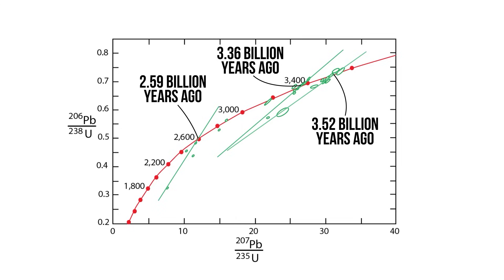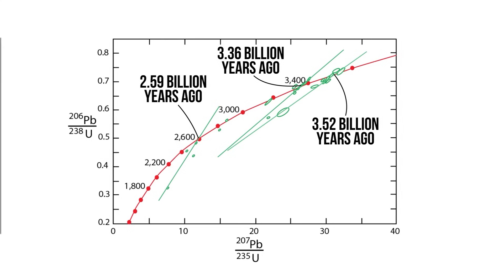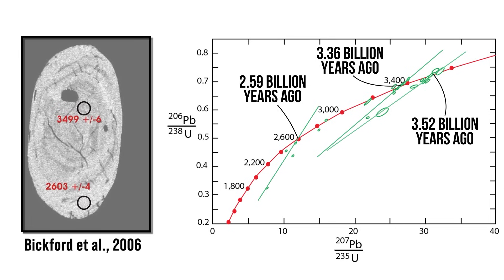The scientists who gathered this data suggested that rocks of two different ages, 3.52 and 3.36 billion years, were mixed together during a deformation event around 2.59 billion years ago, which also caused young rims to grow on the older zircons.